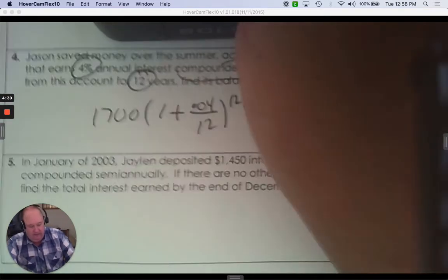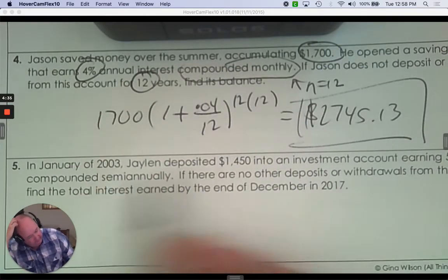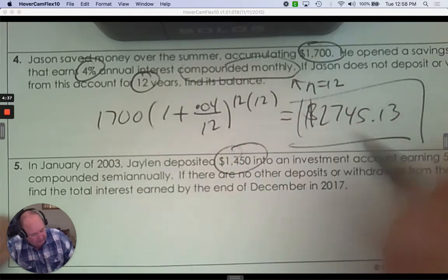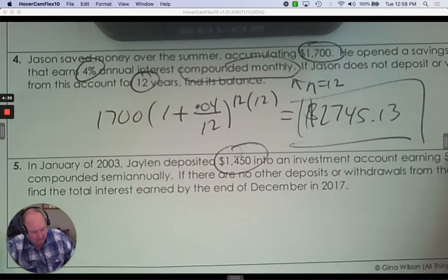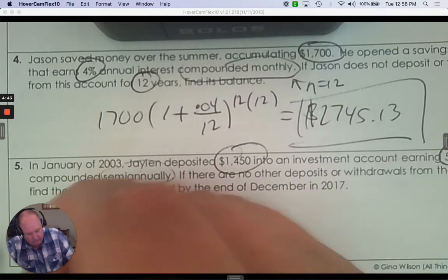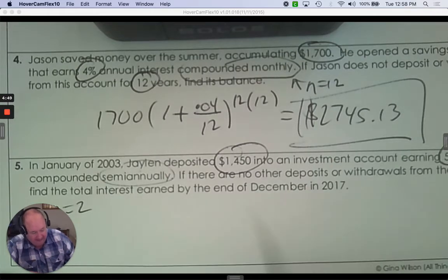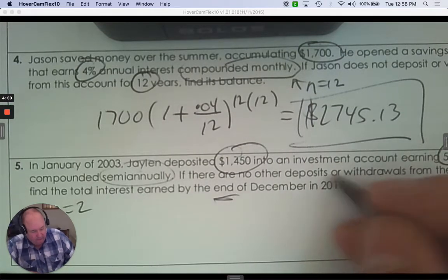Number five. In January of 2003, Jalen deposited $1,450 in a new account. It's earning 5% compounded semi-annually. That's twice a year. There are no other deposits or withdrawals. Find the total interest earned by the end of December 2017.